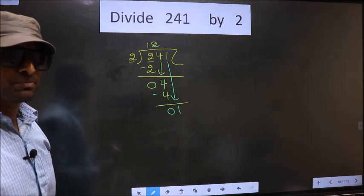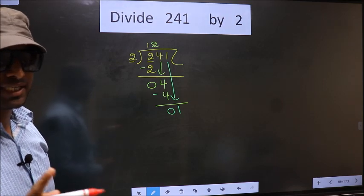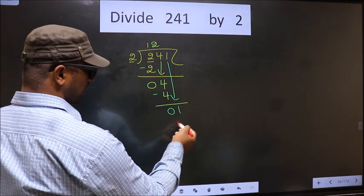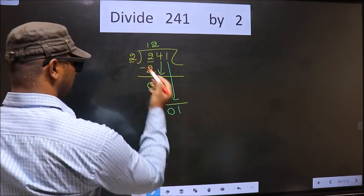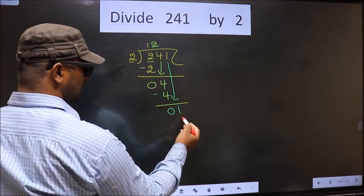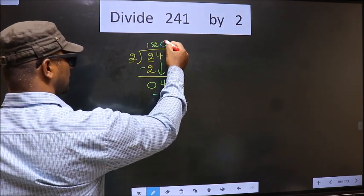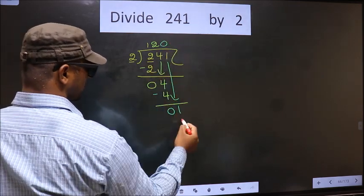Instead, what you should think of is: what number should we write here? If we write 2 here, that is larger than 1. So what we do is we take 0 here. 2 into 0, 0. Now you subtract 1 minus 0, 1.